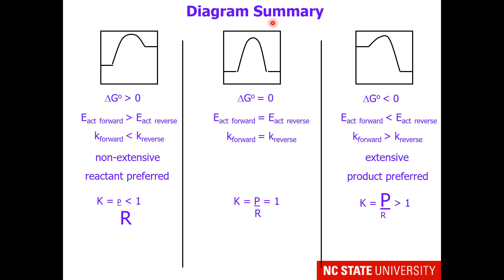Here is a reminder of our reaction coordinate diagram summary. We can have reactions that go uphill from reactant to product, so delta G0 is positive, energy of activation forward is greater than energy of activation reverse, and rate constant forward is less than rate constant reverse. At equilibrium, this reaction will prefer reactant, so it is non-extensive and K will be less than 1. When delta G0 is 0, this reaction will settle at 50-50 and K equals 1. When delta G0 is less than 0, energy of activation forward is less than energy of activation reverse, the rate constant forward is greater than the rate constant reverse, and at equilibrium it will settle more materials into product — it is extensive and K is greater than 1.